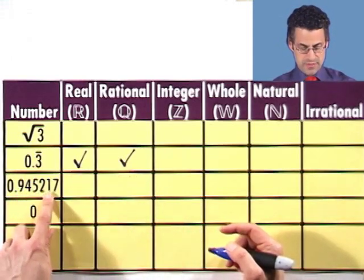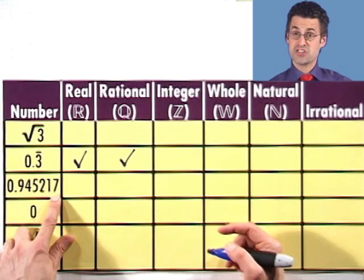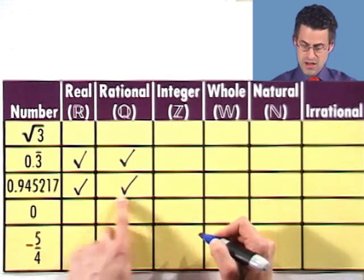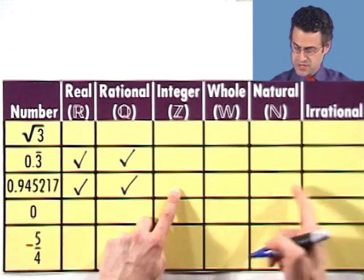What about 0.945217? Well, that decimal expansion terminates. It's a real number. And since the decimal expansion terminates, it's a rational number, not an integer, whole number, natural number, or irrational.